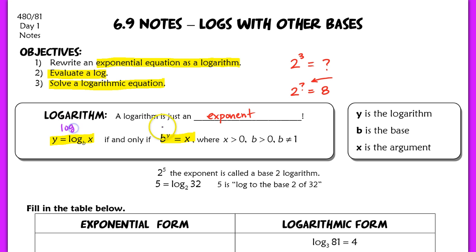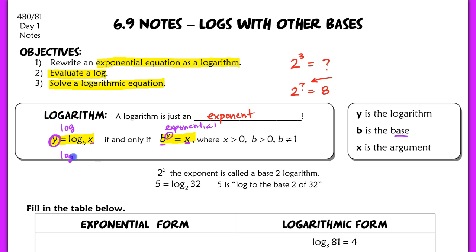On the left we have log form, and on the right we have exponential form. We can convert between forms using the same base. So b is the base, y is the exponent — which is also the log — and x is called the argument. We read this as: the log base b of x is y. There are restrictions: x and b must be positive, and b cannot equal 1. Since the base is positive, even raising it to a negative exponent will always result in a positive value, so the argument must always be positive as well.